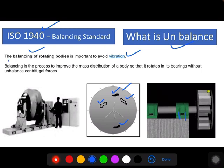So balancing of rotating bodies is very much important to avoid the vibration and catastrophic failures. What is balancing? Balancing is the process to improve the mass distribution of a body so that it rotates in its bearings without the unbalanced centrifugal forces.